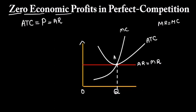So basically this is the point where MC, AR, MR and average total cost all of them are equal to each other.